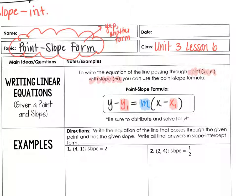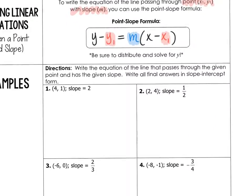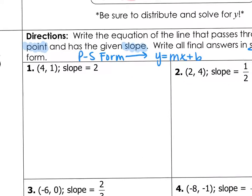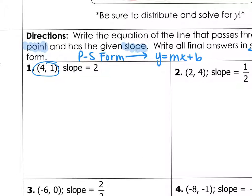Let's take a look at an example of how you set it up in point-slope form, and then switch it into y equals mx plus b. The directions say: write the equation of the line that passes through the given point and has the given slope, and write your final answer in slope-intercept form. Since we're given a point and a slope, we're going to start in point-slope form. This first example, we have the point (4, 1) and the slope 2.